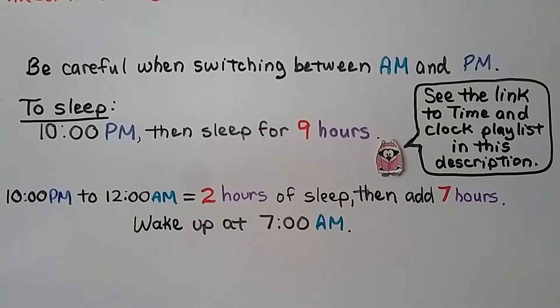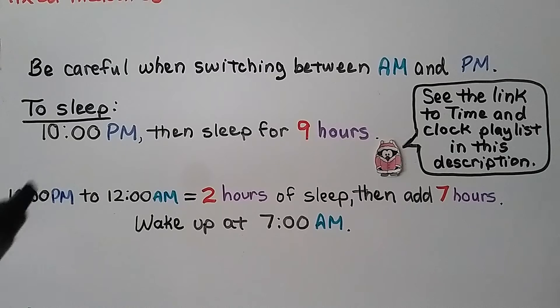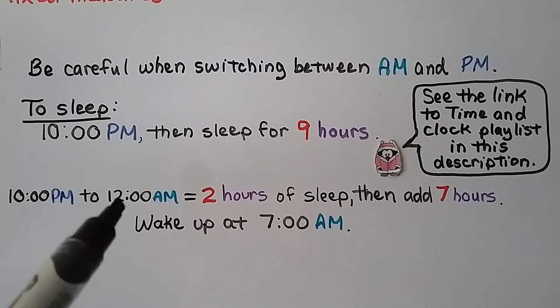Be very careful when switching between AM and PM. If someone went to sleep at 10 o'clock PM, then slept for nine hours. From 10 o'clock PM to 12 o'clock AM, that's midnight. That's two hours of sleep.